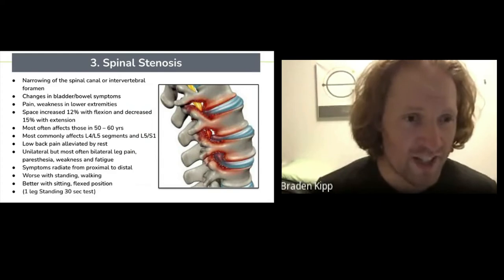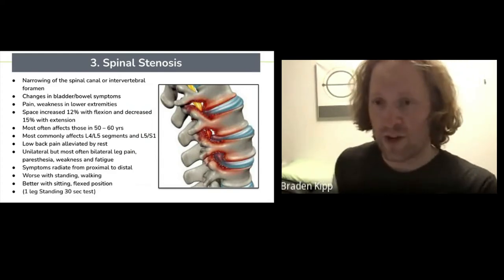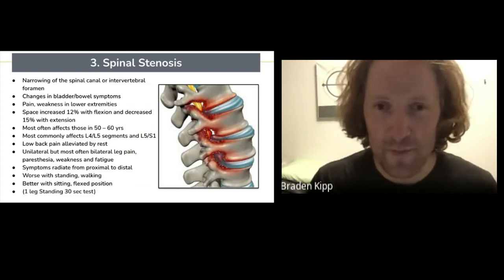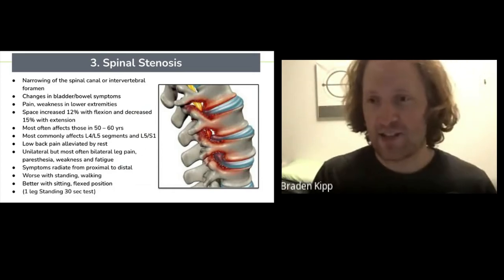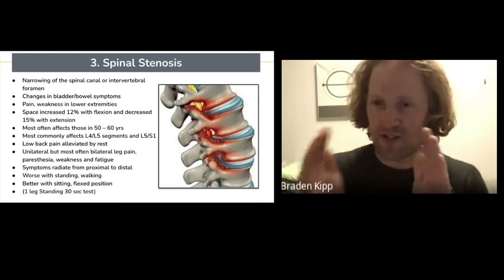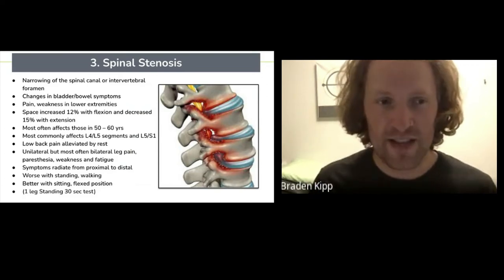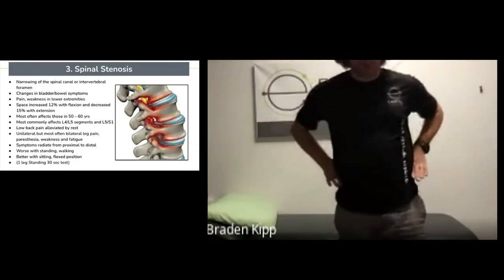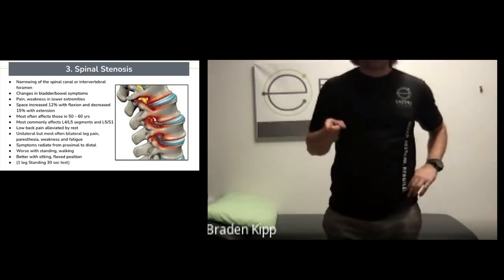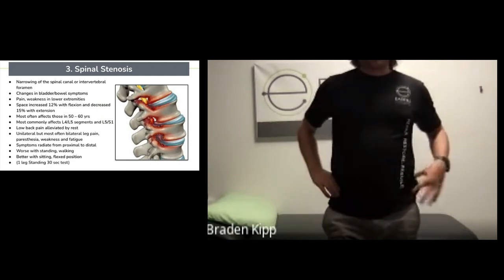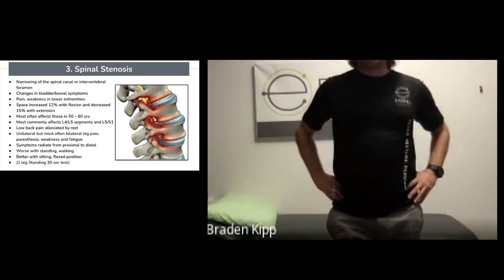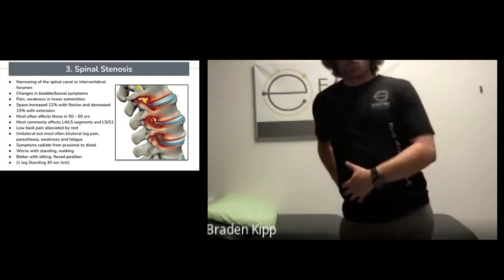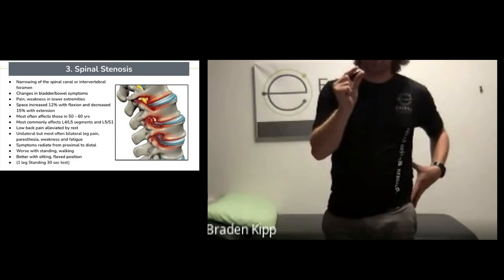With spinal stenosis, you can also get paresthesia, weakness, and fatigue, with symptoms radiating from your upper body and back down into your leg, usually getting worse with standing and walking, and better with sitting in a flexed position. There's a nice test you can try to diagnose spinal stenosis: the single leg standing test. Keep your hips level and try to stand on one leg for at least 30 seconds. Try both sides — usually on one side you'll find compensation where your hip drops, your back gets sore, and radiating pain symptoms come back. If there's weakness, it puts more compression on the spots pinching the nerve.